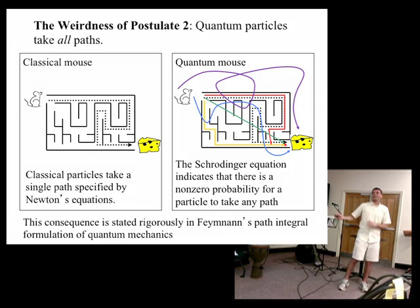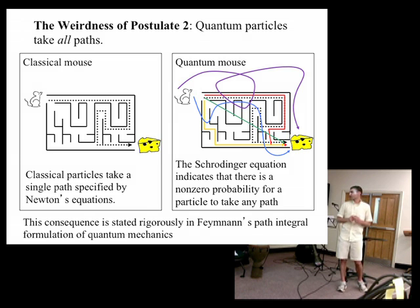Also, it advises that quantum particles take all paths. Imagine I have a classical mouse. I can follow its trajectory through the maze and at every point in time it's at a given location in the maze. It takes a single path and I can follow it. If I have a quantum mechanical mouse, it takes every possible path to get to the cheese. Now the really crazy paths have a very small probability associated with them, but nonetheless they contribute to the total outcome of seeing the mouse at the end.